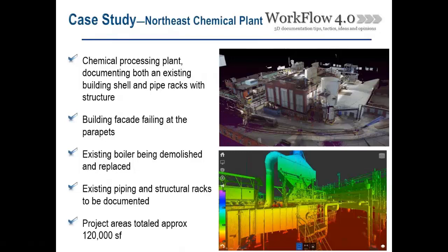With that building facade, they particularly wanted to focus on the parapets — what spots are failing, what spots are out of plumb, what spots need repointing, and where to focus the work. All these things are hard to field measure, so laser scanning was a perfect tool for that. The existing boiler was being replaced along with the structural racks. Overall, between the building, structure, and pipe racks, the total square footage was about 120,000 square feet, fairly spread out across a couple of parts of the site.